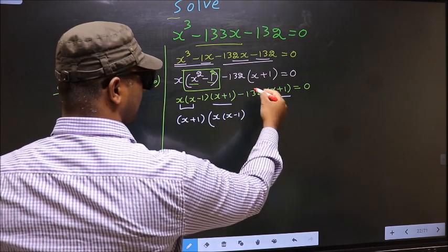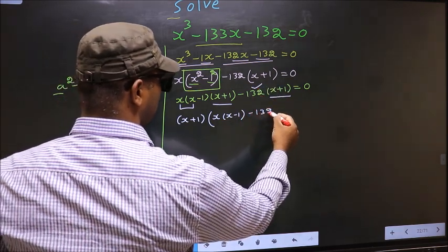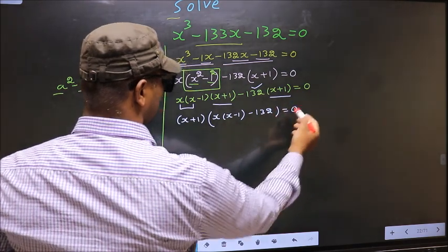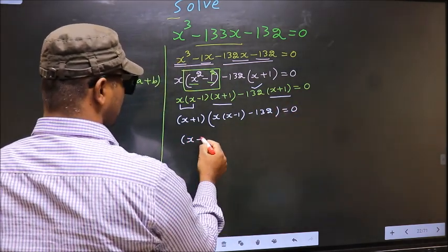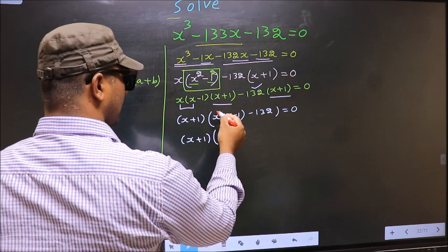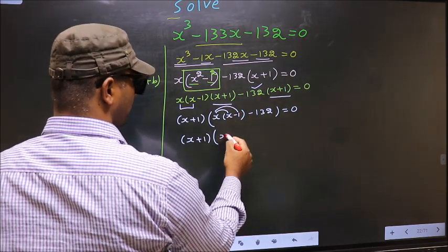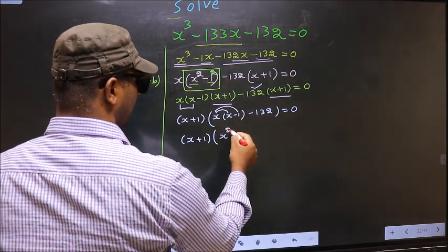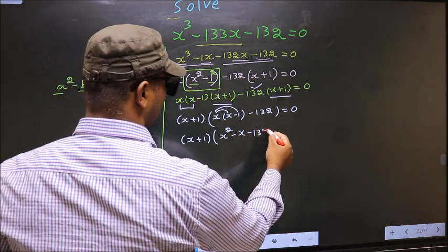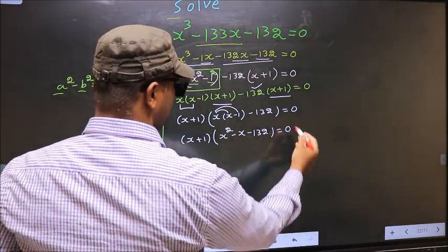Over here we are left with minus 132, equal to 0. Now with x plus 1 outside, we open up the brackets and get x squared minus x minus 132, equal to 0.